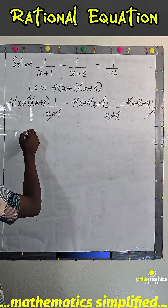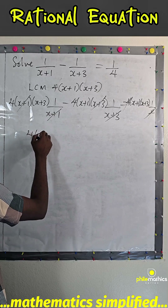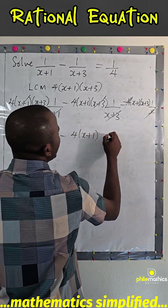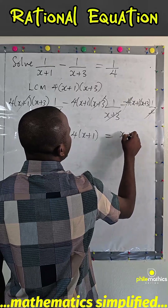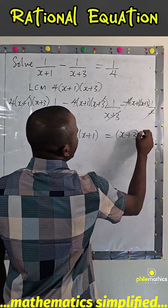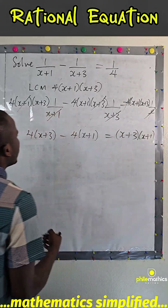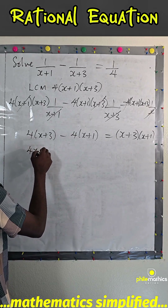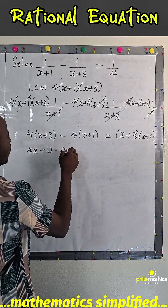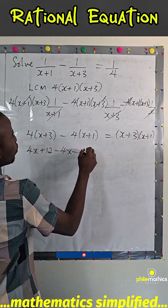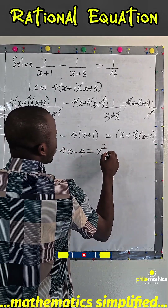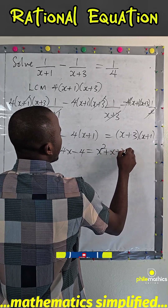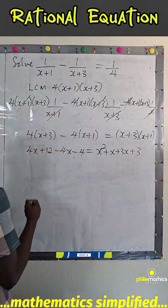So I'm left with 4(x+3), minus (x+1), equals (x+3)(x+1). So if I open the bracket, I have 4x plus 12, minus x, minus 1, equals x squared plus x plus 3x plus 3.